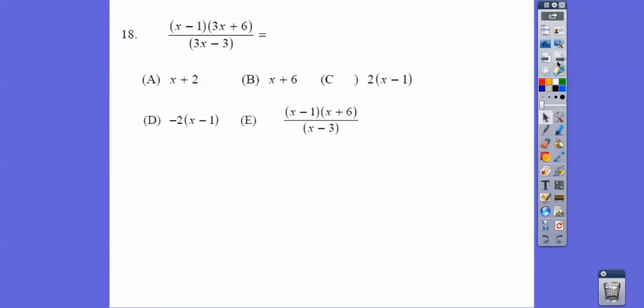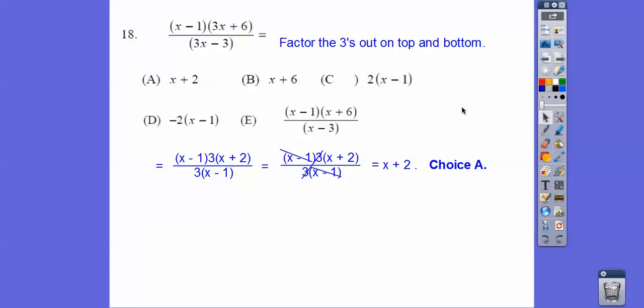All right, so here we can pull a 3 out, a 3 out of this, and a 3 out of this. When we do that, we GCF that out. I did that down here. Here the 3s will cancel, the X minus 1s will cancel, and we're left with choice A.